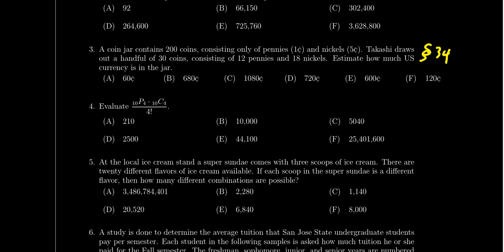Question number four is about making sure we understand the notation used in counting problems — things like permutations, combinations, and factorials. Can you compute something involving these symbols? Permutations were introduced in lesson 30, combinations in lesson 31, and factorials have been used throughout this entire unit. Just be able to understand these calculations and work through them.